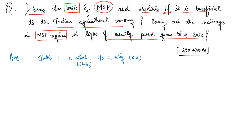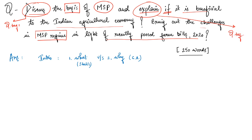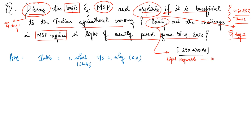The question has two parts. The first part carries more weightage because it has two question tags — 'discuss' and 'explain' — both heavy directives. We will allocate roughly 80 to 85% of our answer to this first part. The second supplementary part uses 'bring,' a lighter directive, so around 10 to 15% weightage will go there.